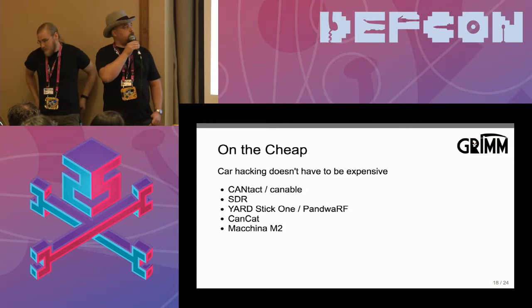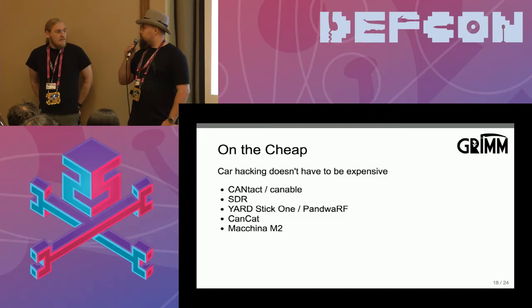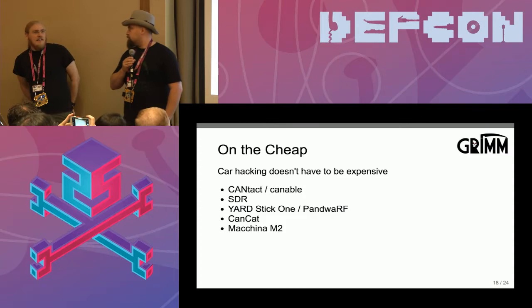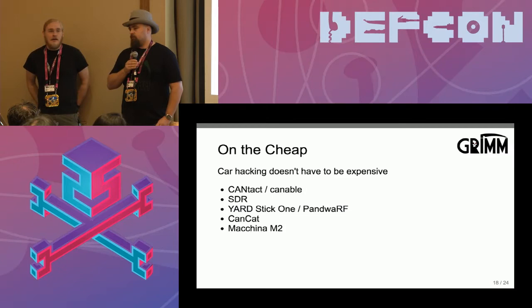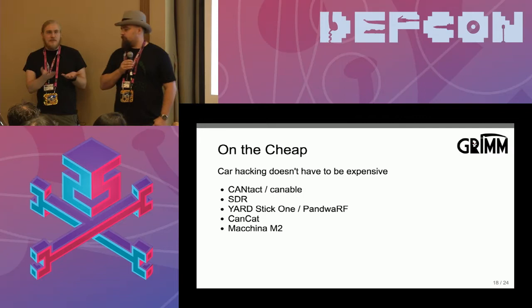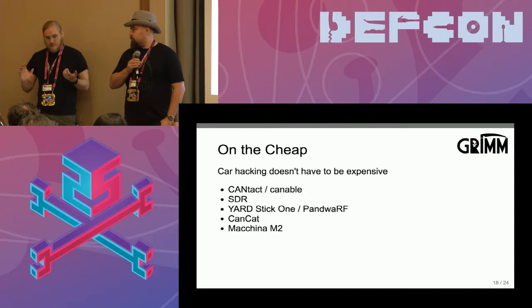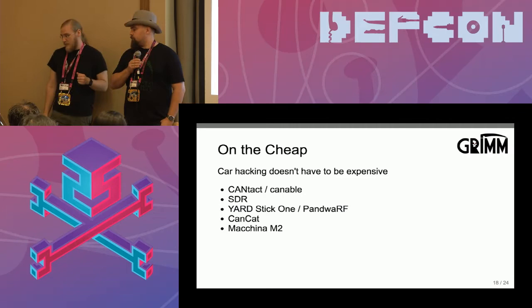Car hacking doesn't have to be all that expensive. The Cantact and CANable — if you want to build your own CANable, I built them in quantities of 15 for about eight bucks each. The CANable and Cantact are open-source hardware CAN adapters built around a small STM32 microcontroller. The default firmware exposes it as a UART using a standard CAN protocol. They're really basic hardware, but they work really well.